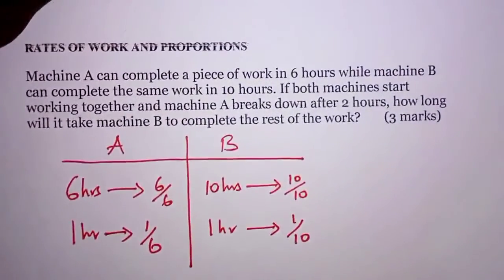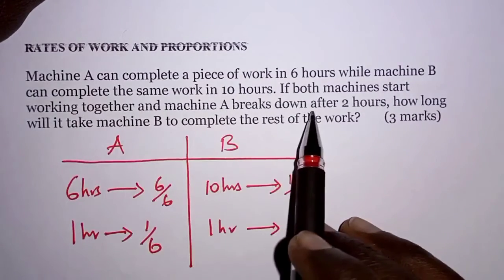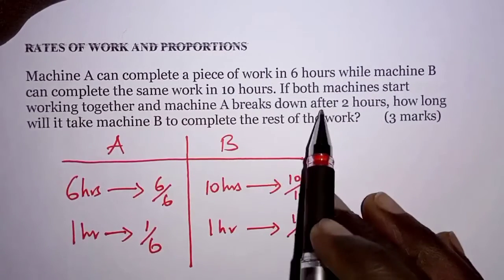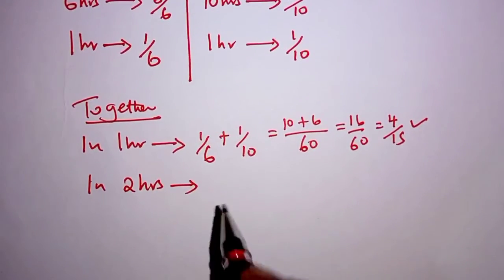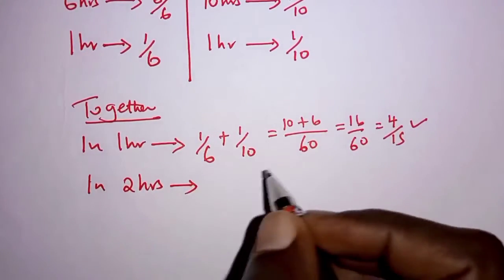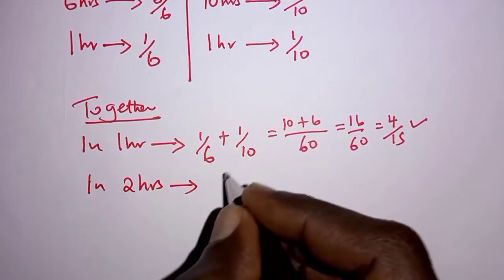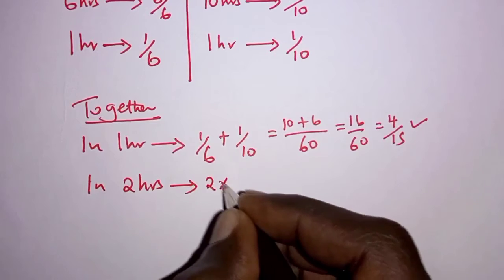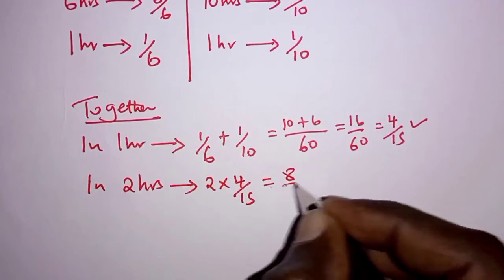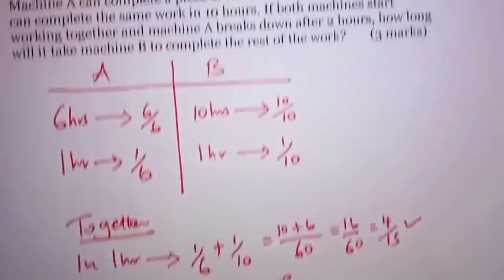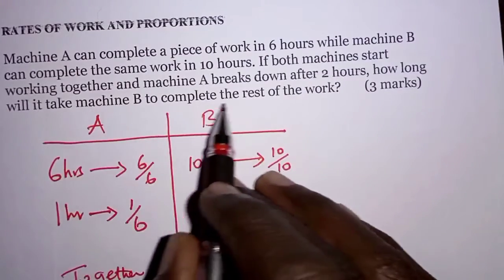We are told both machines start working together and Machine A breaks down after two hours. So within those two hours they were working together, we need to find the fraction done by both of them. In one hour they do 4/15, so in two hours we have 2 times 4/15, which is 8/15.